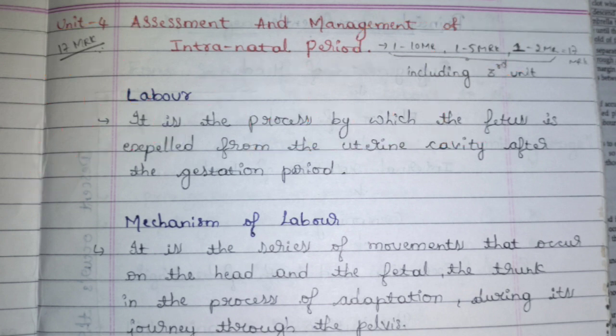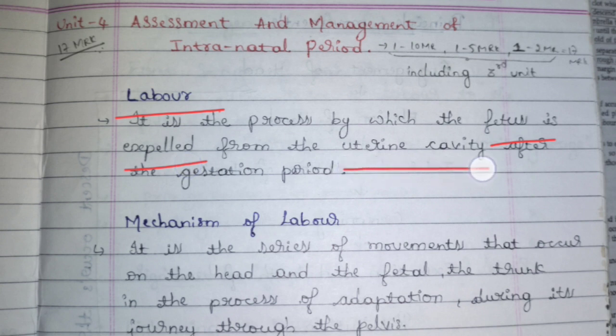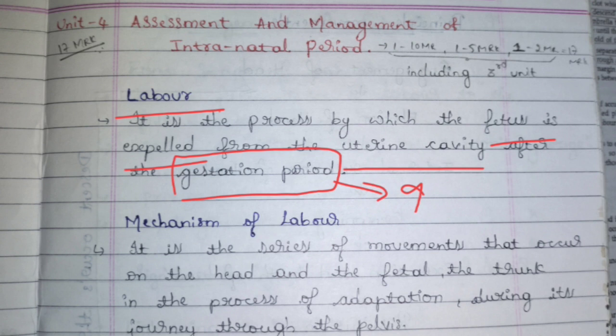The first topic is labor. What is labor? Labor is nothing but delivery — the birth of the baby. The definition is: it is the process by which the fetus is expelled from the uterine cavity after the gestation period. The gestation period is nine months — the baby stays in the womb for nine months. So labor is the process in which the baby comes out from the uterus after completing the gestation period.